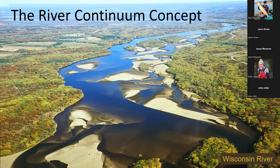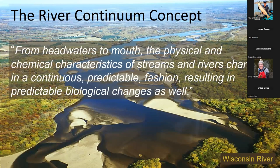The most cited paper in all of aquatic ecology is the River Continuum Concept by Robin Vannote and others, published in 1980, cited thousands of times. The concept describes how streams change from headwaters as they get bigger — wider, more volume, more sunlight — affecting temperature and nutrient levels as you flow farther down the watershed. These inherent physical factors strongly influence the biological characteristics of our streams and rivers.